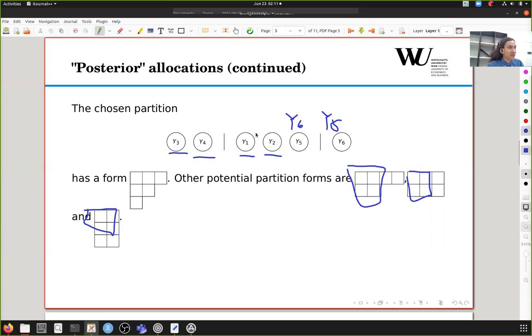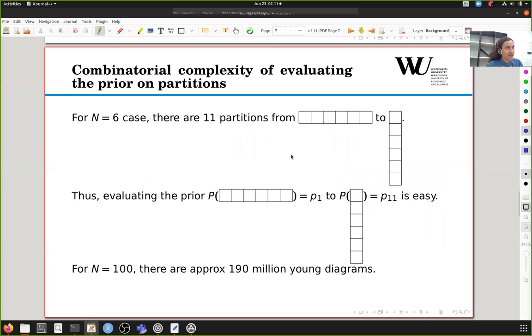So you're not really using data that much. You're only using data to compare this to this. You don't want to end up in a situation like this. In order to prevent this from happening, you can generate all possible Young diagrams and compute these probabilities. This is possible if you only have six observations because there are only 11 possible Young diagrams. But if you have 100 observations, which shouldn't be that unusual, then there would be this many Young diagrams. So we can't do this approach.